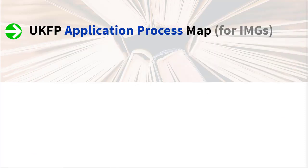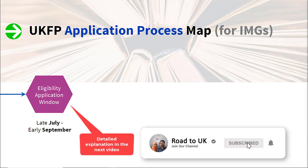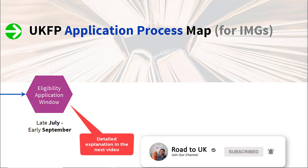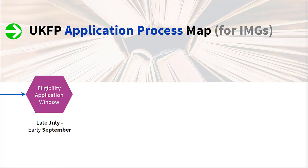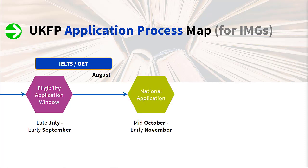What does the application process look like for an international medical graduate? First and foremost is the eligibility application. The eligibility application period typically runs from late July to early September — the handbook will give you exact dates as those may change each year. Around this time you also want to take your IELTS or OET, ideally done by August. The national application happens from about mid-October to early November, so that's the target you need to start setting.